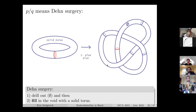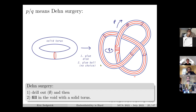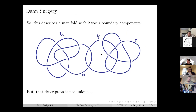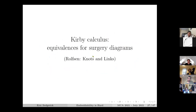An empty set label means to drill out that component, making it a boundary component of your manifold, which you can optionally fill in and perform a Dehn filling. When I give you a picture like this, what I'm describing is a manifold with two boundary components. This is a surgery description of a manifold, which is not at all unique - we can do Kirby calculus to change the picture.